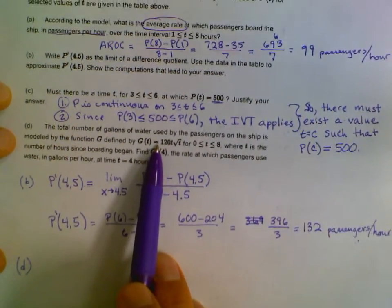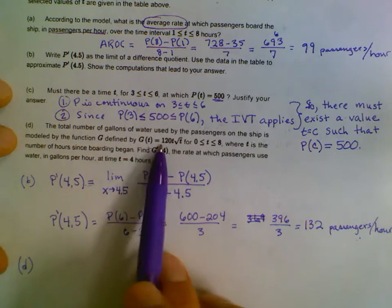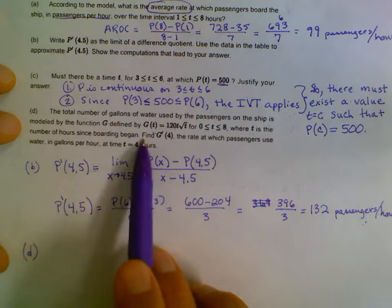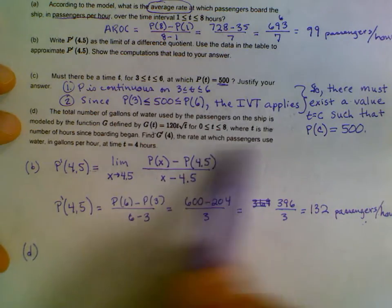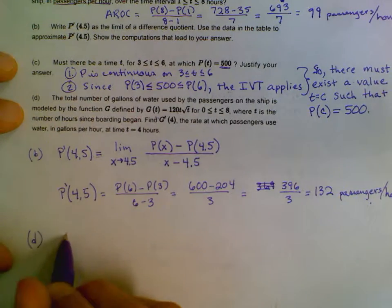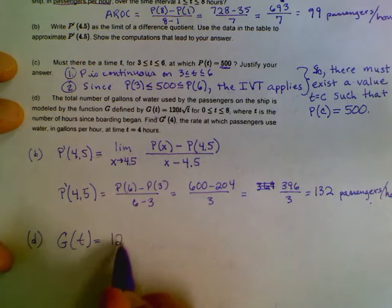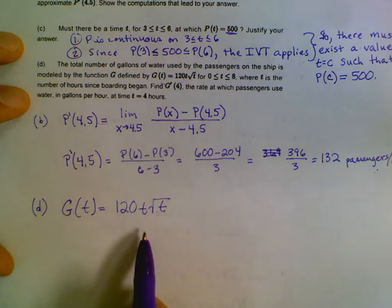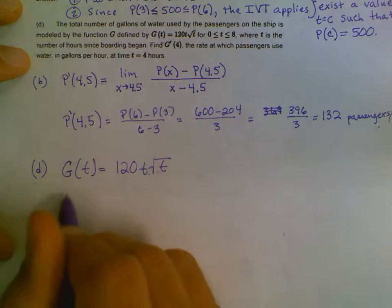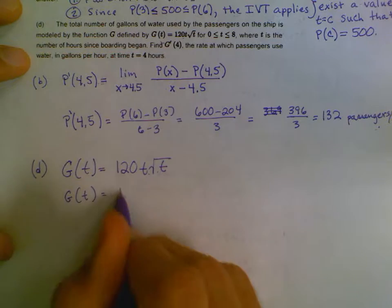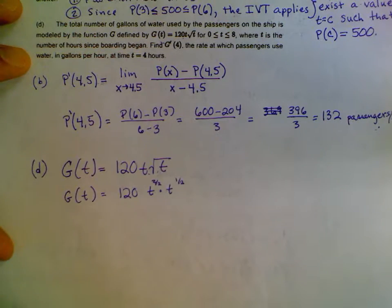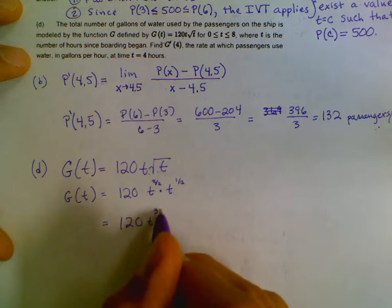The total number of gallons of water used by the passenger ship is modeled by function G. Now G, it has nothing to do with the passengers anymore. Well, okay, this is the number of gallons that they use. So number of hours since boarding began. So find G prime of four, the rate at which passengers use water in gallons per hour. Well, if G of T is 120T times the square root of T, and you're looking to find G prime, you could either use the product rule, or in this case, I think I would just simplify T root T. I would just rewrite that as 120T times T to the half. And then we're going to add exponents. So two halves plus one half would be 120T to the three halves.